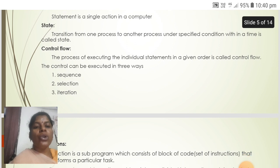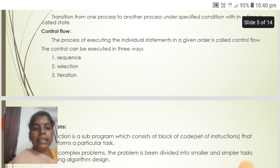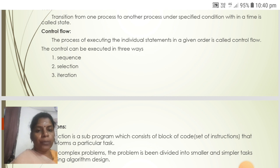Then the control flow. The process of executing the individual statements in a given order is called control flow. The control can be executed in three ways: Sequence, selection and iteration.